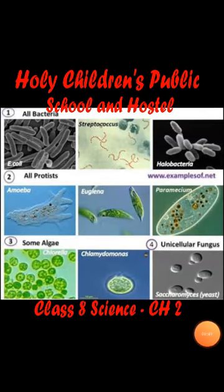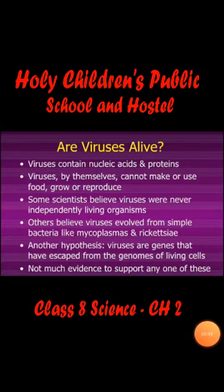Our second topic is kinds of microorganisms. Major kinds of microorganisms include bacteria, fungus, protozoans, algae, and viruses. Viruses are the smallest of all the microorganisms and are quite different from the others. They lie on the borderline dividing living things from non-living things. Viruses lack a cellular structure but can reproduce only inside the cell of the host organisms.